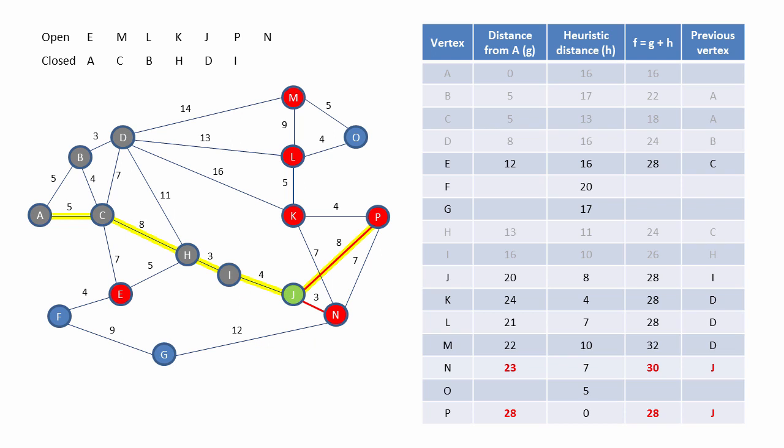Notice that we didn't need to visit every single vertex in the graph. You can imagine, with a much bigger graph, with a lot more vertices involved, there'd be a much larger proportion of unopened vertices. And that's the beauty of the A-star algorithm. It doesn't have to visit every vertex in the graph.